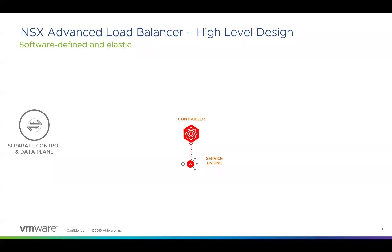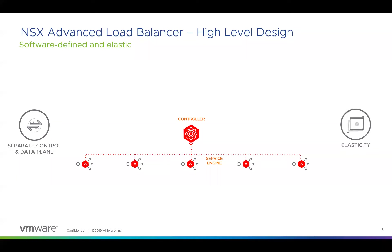Now let's talk about the high-level design of the load balancer. One of the first things you'll see is that the data plane and the control plane are separated. With our legacy load balancer, the data plane and control plane were merged, which prevented us from having a holistic single point of view for our entire environment. For example, if you have a site with 10 pairs of load balancers and want to see what's going on with each, you had to log on to each one. With this separation, we can log into one controller and manage all 10 pairs from a single pane of glass.